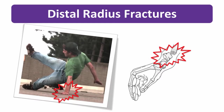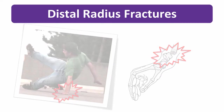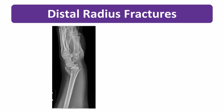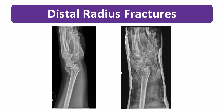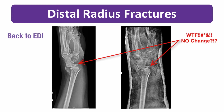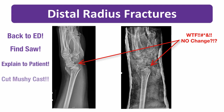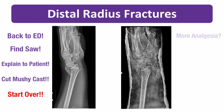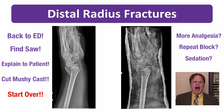Few things are more frustrating than attempting a reduction of a Colles' fracture in the emergency department and sending the patient over for their post-reduction x-rays, only to find out that the reduction is still not adequate and now you have to go back, find the cast saw, go to the patient and explain that you have to take the cast off, and basically start all over again. This may involve more analgesia, a repeat block, or even a repeat sedation — not the best part of your day, but something most of us have had to do at some point.